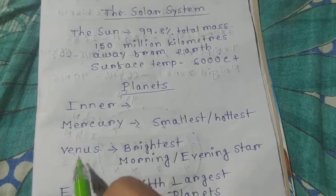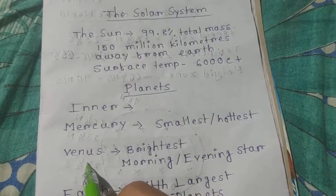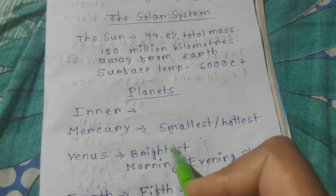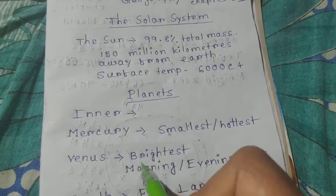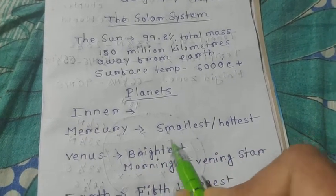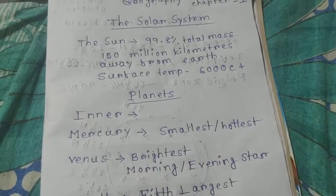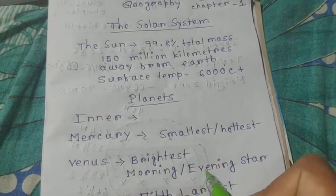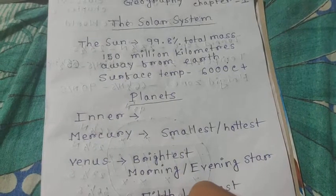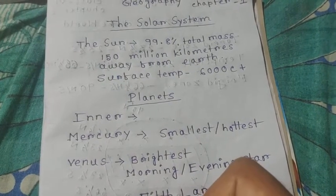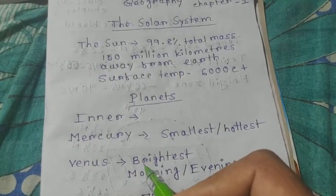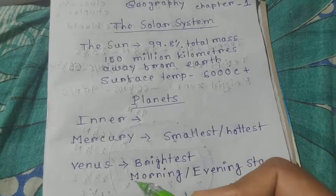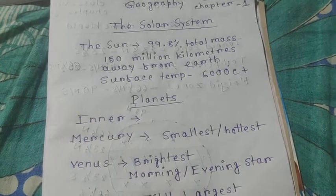Then Venus. Venus is the most brightest planet among all the planets. It is also called the morning and evening star, because of its brightness that we can see during morning time and evening time in a clear sky.